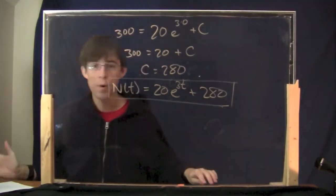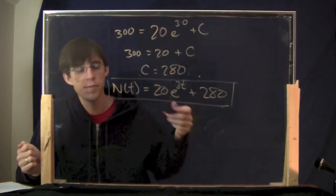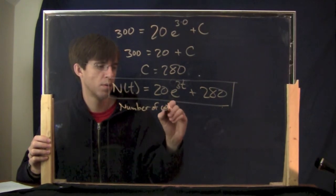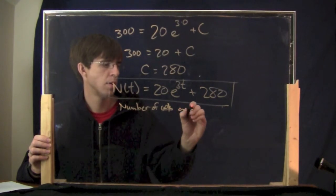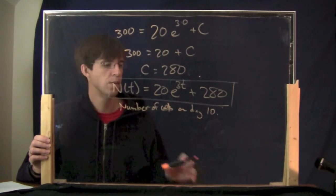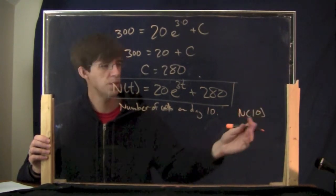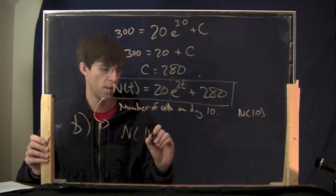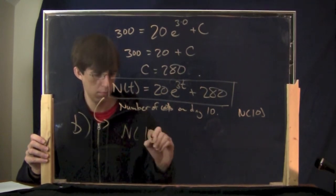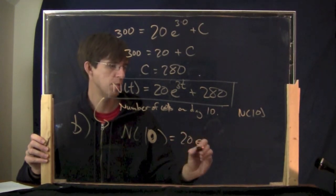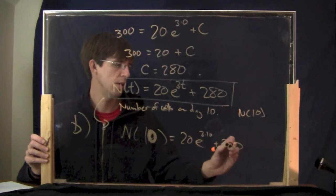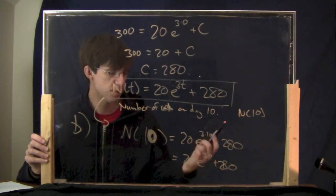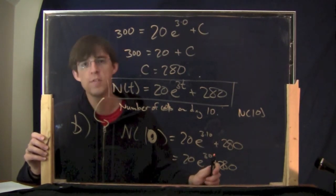Let's move on to Part B, which is actually quite a bit easier. Part B said: use your answer from Part A to find the number of cells on day 10. Well, n of t is the number of cells on day t, so the number of cells on day 10 is n of 10. You just plug in 10 to the formula: n of 10 equals 20 times e to the 3 times 10 plus 280, which is 20 e to the 30 plus 280. You can't really do this without your calculator, but that's the answer.